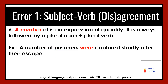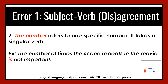Point number six: a number of is an expression of quantity. It is always followed by a plural noun plus a plural verb. Example: a number of prisoners were captured shortly after their escape. Point number seven: the number refers to one specific number, therefore it takes a singular verb. Example: the number of times the scene repeats in the movie is not important.